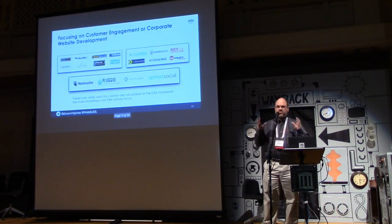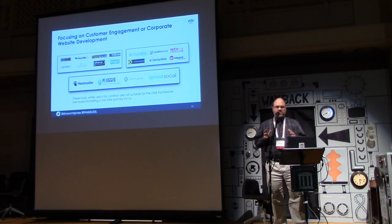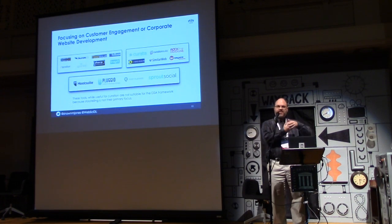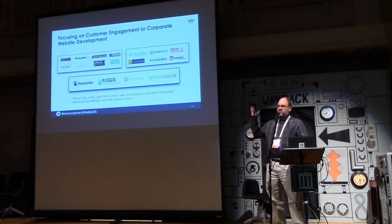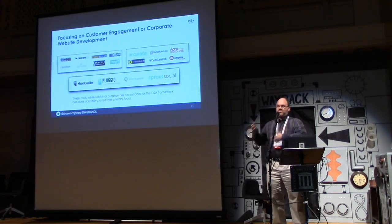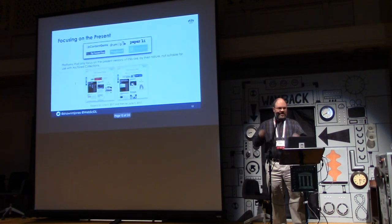Storify was the platform chosen for the Dark and Stormy Archives Framework, but which others might be suitable replacements? I went through about 60 tools and found that a number focus on customer engagement. These are listed as curation tools, but they're not necessarily what we're looking for. We want something where you can put links in and get a nice listing of social cards out. Other tools only focus on the present — they curate based on a particular topic happening today, and tomorrow the visualization has changed.